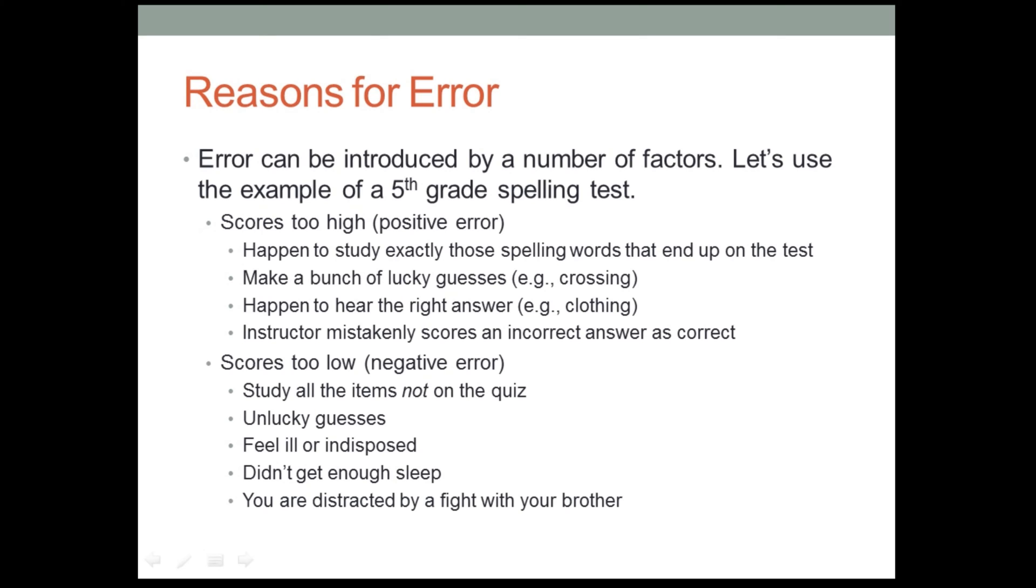Coming back to the error for just a minute. Error can be introduced by a number of factors. And maybe I can make this clearer by using the example of a fifth grader taking a fifth grade spelling test. I think we've all been fifth graders. We've all had an experience like this at one time or another, that our scores may not quite reflect our true ability. Well, sometimes you get lucky, and our score on our spelling test is maybe higher than it should be, should have been. This could happen if we got lucky by happening to study exactly the spelling words that ended up on the test. That's one possibility. Or we just might make a bunch of lucky guesses. Let's see now. Is crossings spelled with one S or two S's? I don't know. I'll guess two S's. And by golly, we got it right.